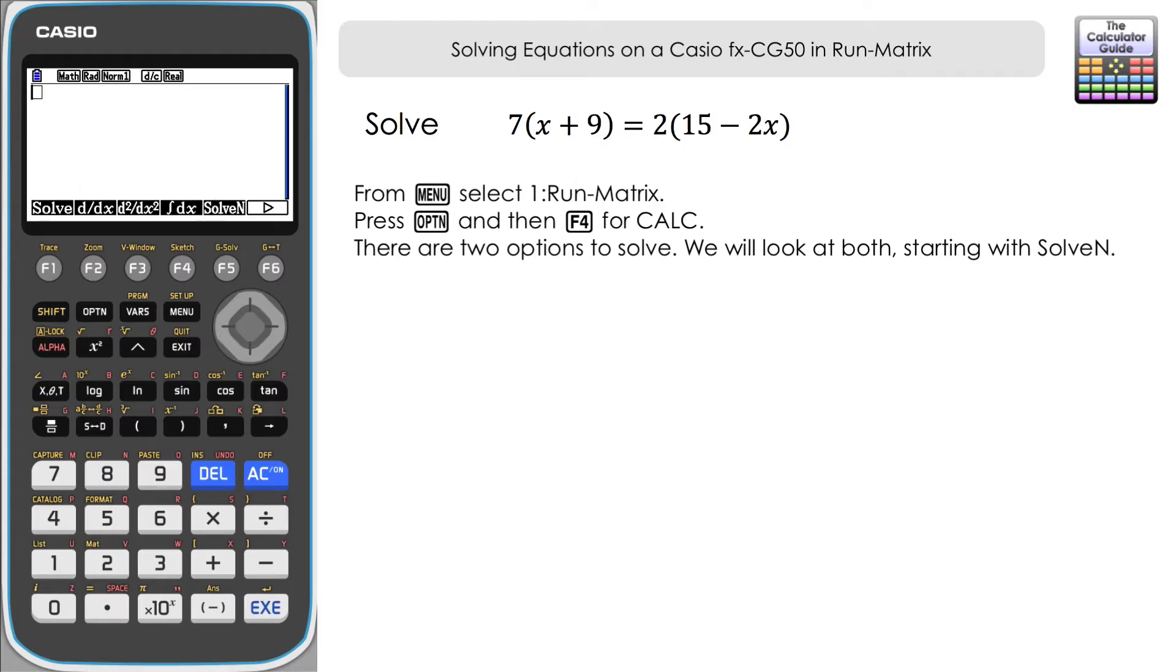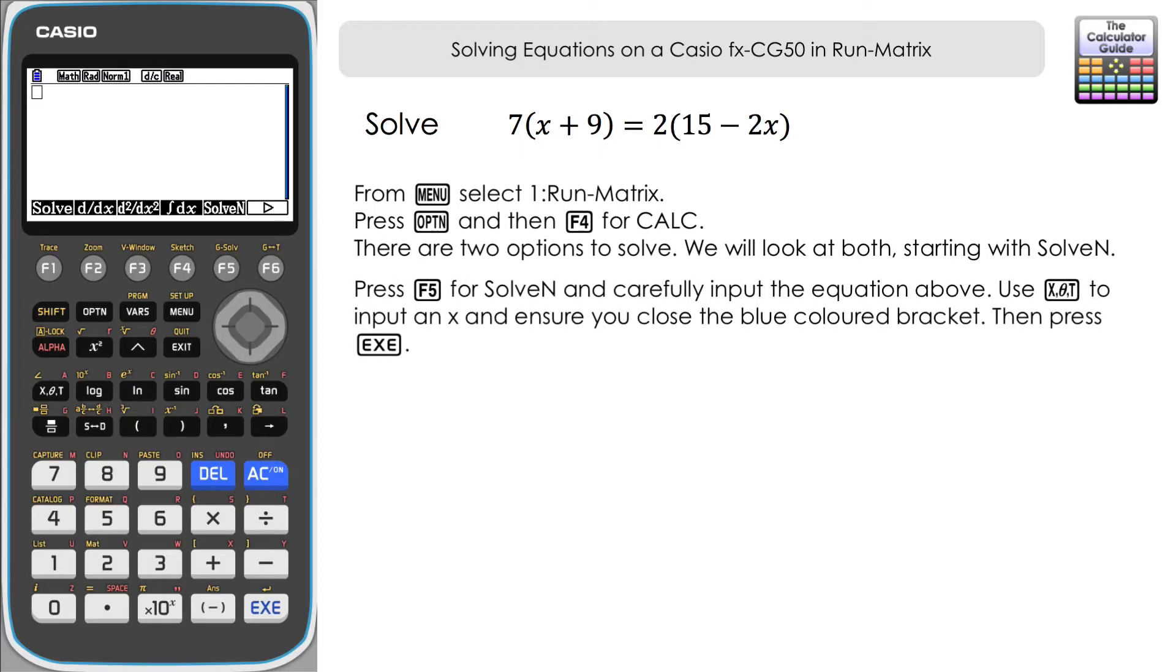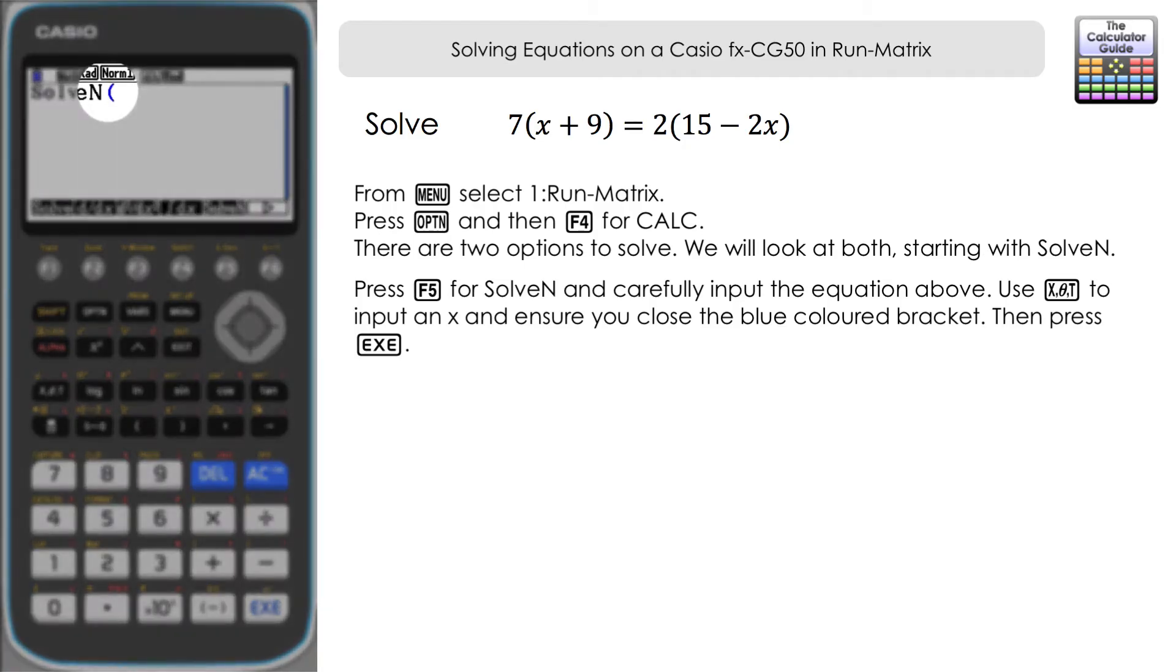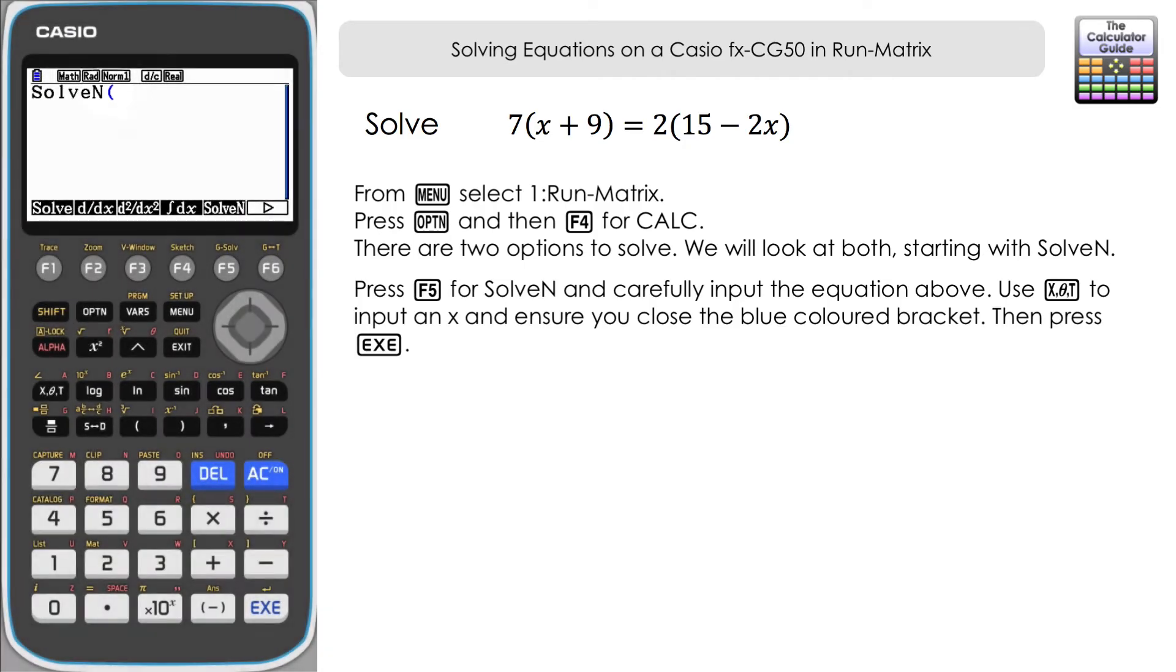Now SolveN is the easiest one to use because you don't have to define a starting value, an initial value, or a range with which to try and solve the function. You can just input your function of x, and it is important that we use x in all of these examples for the solver. If we have a different letter, we just need to use x as a substitute value. Let's input our equation then. It's worth noting that the first bracket that opens up here is blue, so you need to make sure that your closing bracket is blue as well to ensure we've got everything included within the solve function.